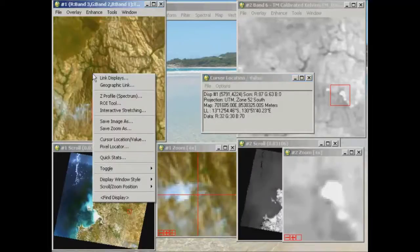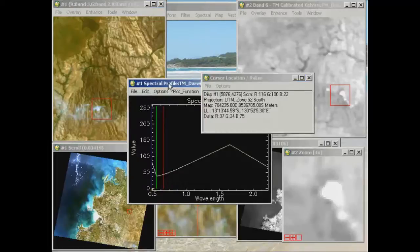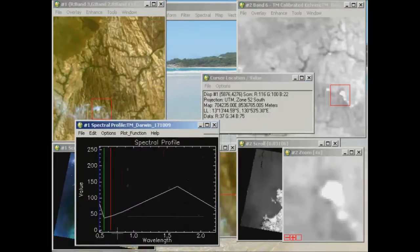You can also right click in the image and go to Z profile spectrum, and this time we'll actually see a graph based on the individual bands.